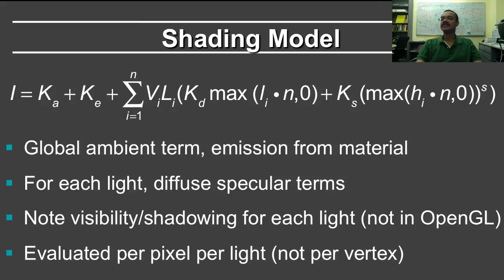Finally I've written down explicitly the formula for the shading model. Notice first the ambient term, then the emission. So really your intensity is initialized by the sum of ambient and emission. Then we have the per light terms. For each light, what do you do? Notice the visibility term.